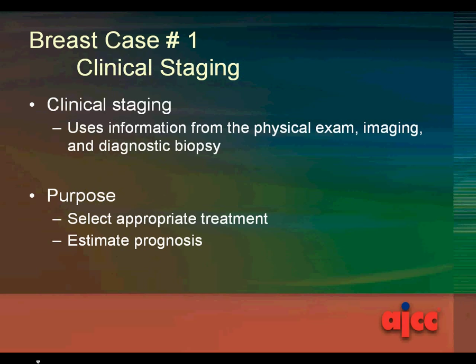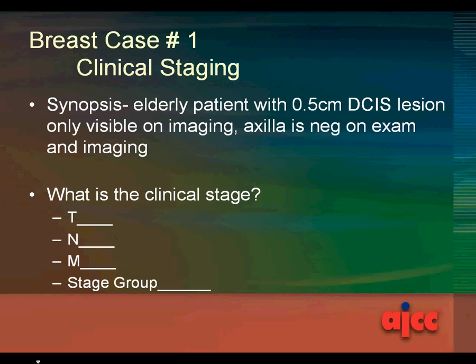For clinical staging, we used information from the physical exam, imaging, and diagnostic biopsies. The purpose is to select appropriate treatment and estimate the prognosis. The synopsis for clinical staging: we have an elderly patient with a 0.5-centimeter DCIS lesion only visible on imaging, and the axilla is negative on exam and imaging.